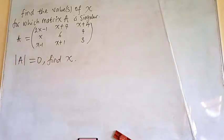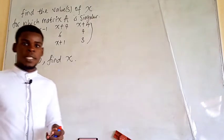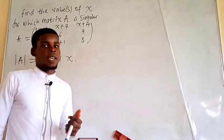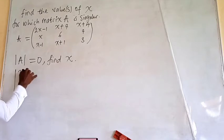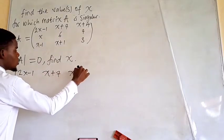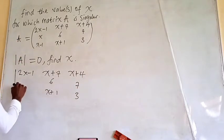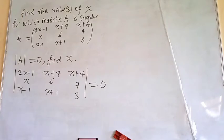By the determinant of a matrix — if the determinant of a matrix is 0, that means that that matrix is a singular matrix and therefore it is non-invertible. We just have to show that with 2x minus 1 as one of the entries, and 7, 3, 6, x plus 1, x minus 1, and x itself, the determinant here is equal to 0.